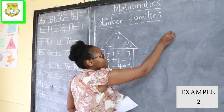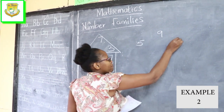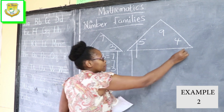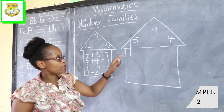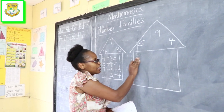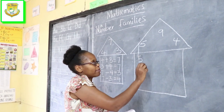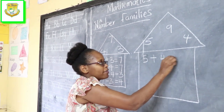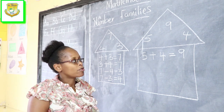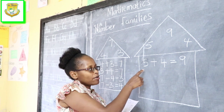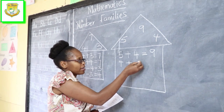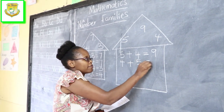Now for the second example, we can also use different numbers — that is 5, 4, and 9. From these three numbers we are going to obtain a number family using the same procedure. We take the first two small numbers: 5 added to 4 to give us 9. That is the first number sentence formed by the addition sign. Then we alternate the two small numbers — we started with 5, so the second time we begin with 4: 4 plus 5 to give us 9 as well.